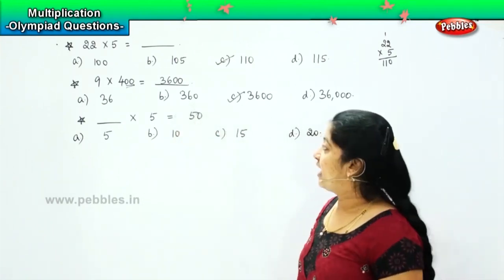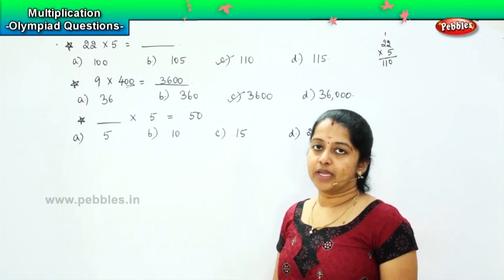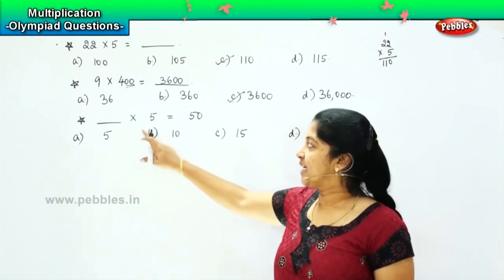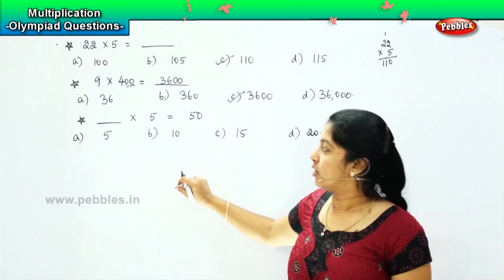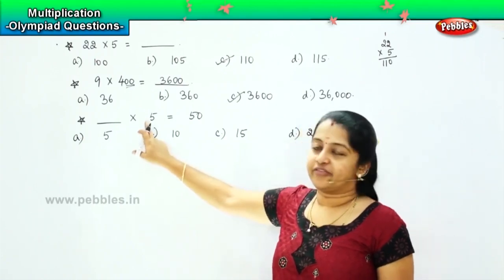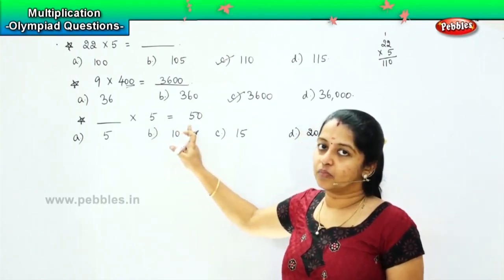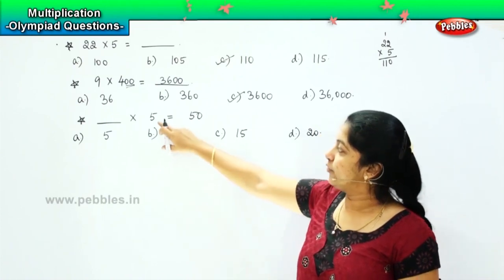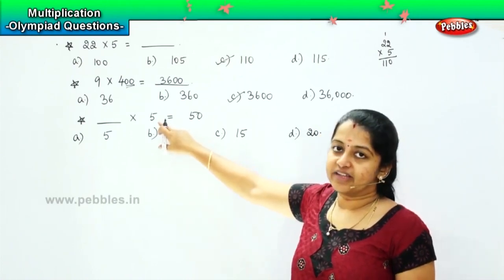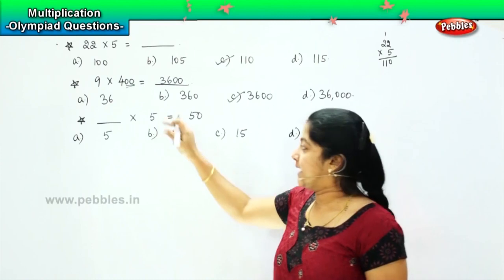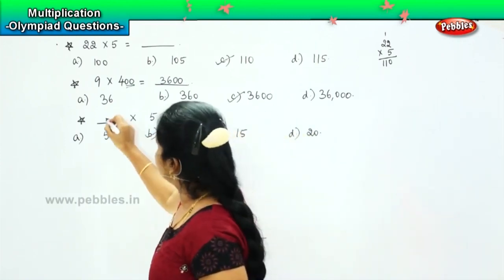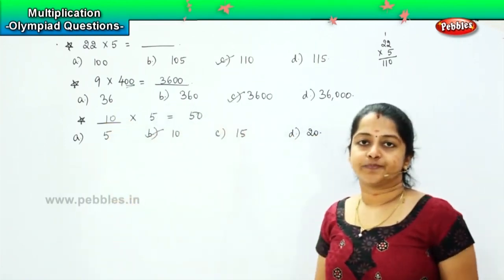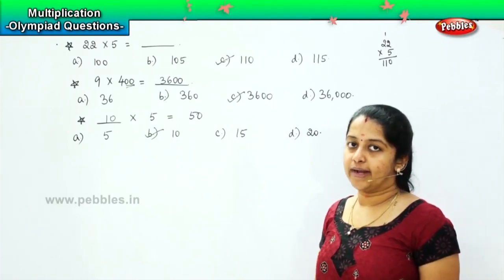So dash into 5 is equals to 50. So we will try to multiply with each number to see whether our answer is correct or not. So 5 into 5, is it 50? No. 10 into 5, is it 50? 10 5s are 50, is it right? Yes. So which means option B 10 will be the right answer. Clear, shall we move ahead?